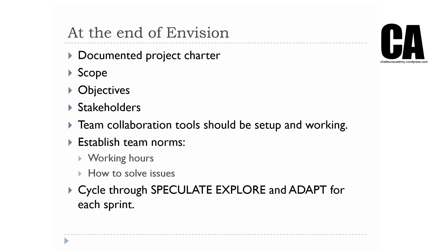You need to have your team collaboration tools set up and working. You need to establish team norms — things like what hours do you work and how are you going to solve problems. Then you cycle through speculate, explore, and adapt for each sprint. At the end of the envision stage, you must have documentation: a document outlining your schedule, your team members, the equipment you need, your budget, your clients, and all other stakeholders. If you don't have this document, you're not doing it properly.